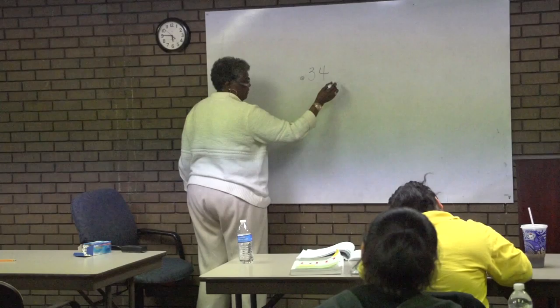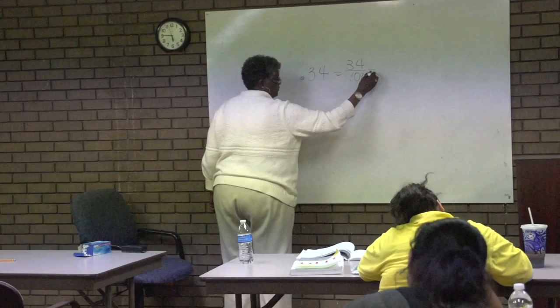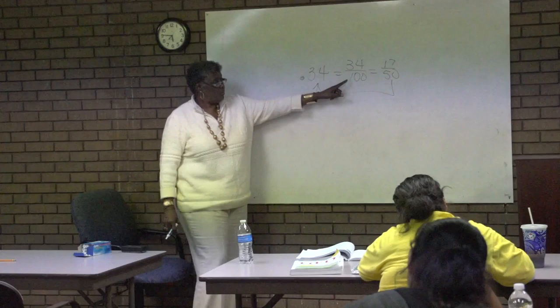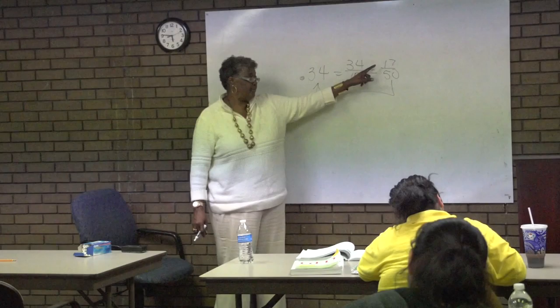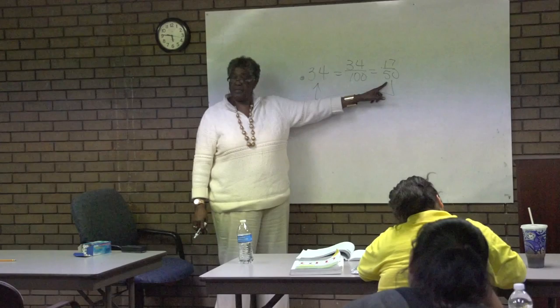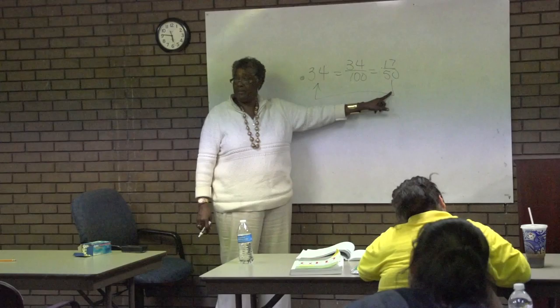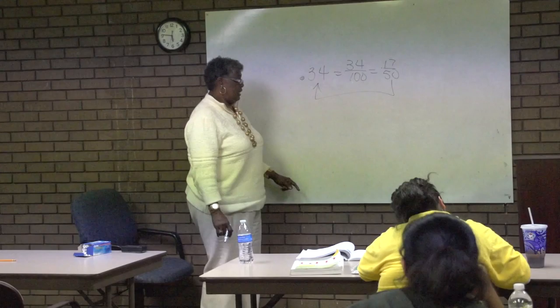When you want to change a decimal to a fraction, you read it, you write it, you reduce it. This fraction would equal this decimal — the same thing. Read it, write it, reduce it. 2 goes into both of these evenly. 2 will go into 34 seventeen times. 2 will go into 100 fifty times. So this fraction is the same as this decimal. Having 34 out of 100 is the same as having 17 out of 50. Makes sense, doesn't it? Same thing.